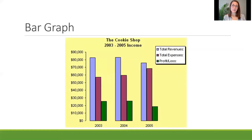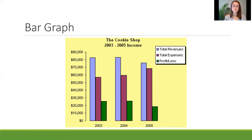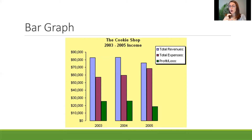This is a bar graph. For a bar graph we can see a number of different varieties, and the one we have here is going to show us three different bars at a time for each year. If you look at the bottom — the x-axis — you'll see the years 2003, 2004, and 2005. On the left side we have values from zero dollars to ninety thousand dollars. The title tells us this is for a cookie shop called 'The Cookie Shop' and it shows income between 2003 and 2005.